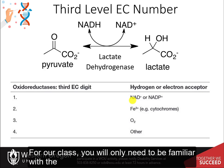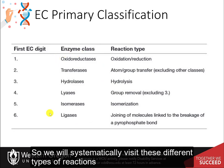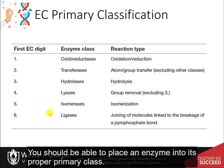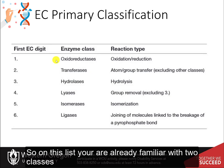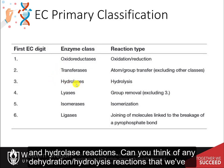For our class, you will only need to be familiar with the primary classification level — the major types of enzymatic reactions. You should be able to place an enzyme into its proper primary class. You are already familiar with two classes: the oxidoreductases, which we just looked at, and hydrolase reactions. Can you think of any hydrolysis reactions that we have already looked at?